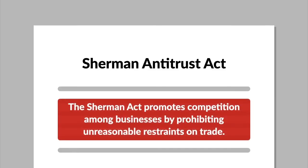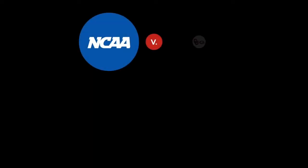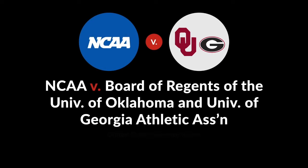The Sherman Antitrust Act promotes competition among businesses by prohibiting unreasonable restraints on trade. In NCAA v. Board of Regents of the University of Oklahoma and University of Georgia Athletic Association, the United States Supreme Court considered whether the NCAA's limit on televised college football games was an unreasonable restraint on trade.